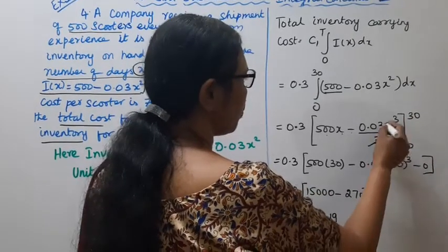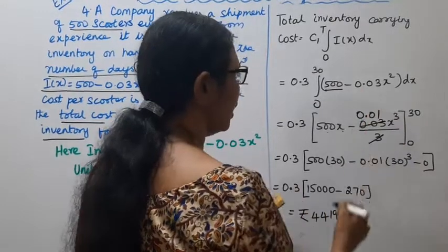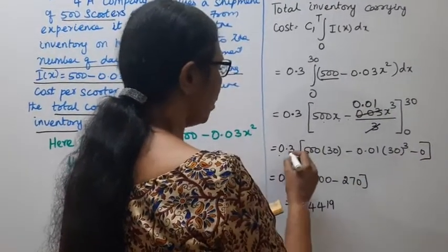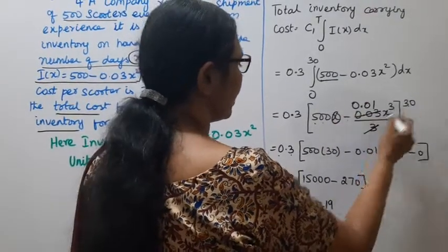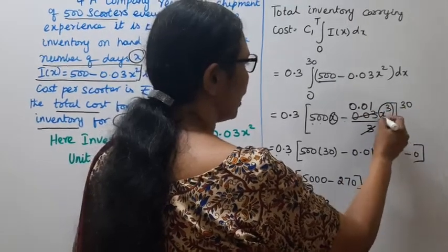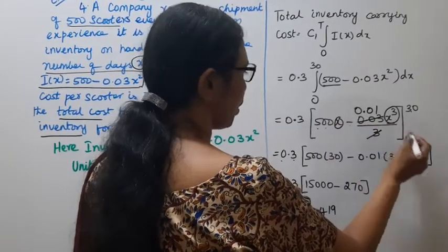Now cancel the 3. We get 0.3 times [500(30) - 0.01(30³)] from 0 to 30. Upper limit minus lower limit gives 0.3 times [500(30) - 0.01(30³) - 0].